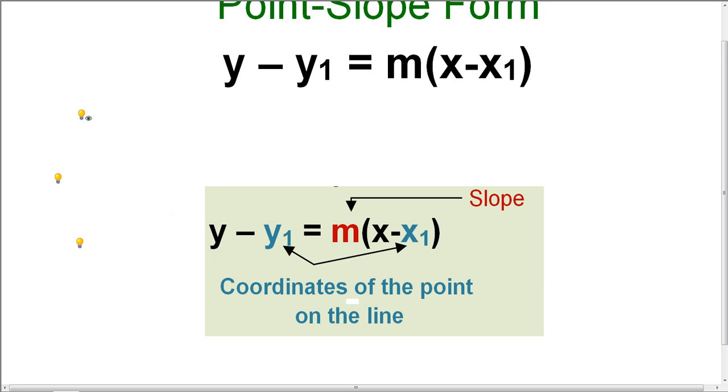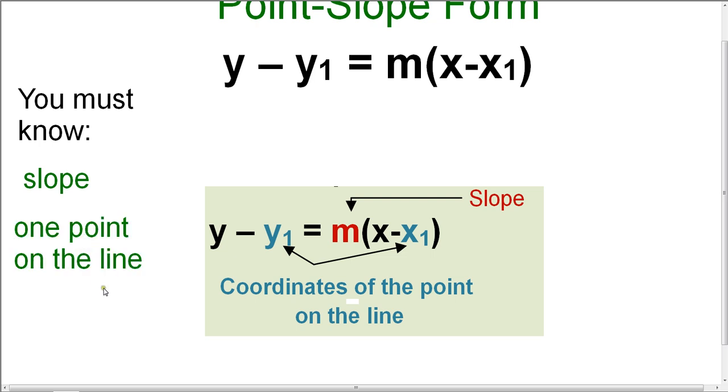So before we go on, I just want you to remember that in order to use this form, you must know the slope and one point that lies on the line. And if you don't know the slope, you must be able to find the slope.